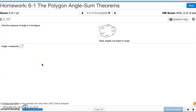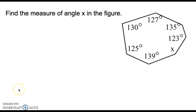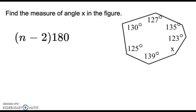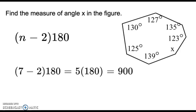Number six: we need to find the measure of angle x in the figure. x is the interior angle, and we need to find out what every angle inside adds up to. To do that, we use the formula n minus 2 times 180. There are seven sides, so we do 7 minus 2, which is 5, and 5 times 180, which is 900.